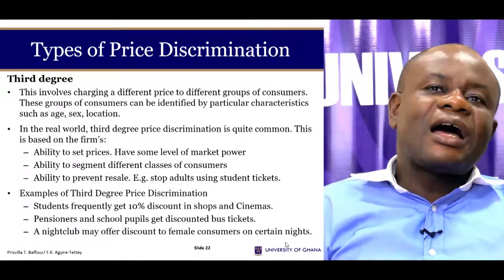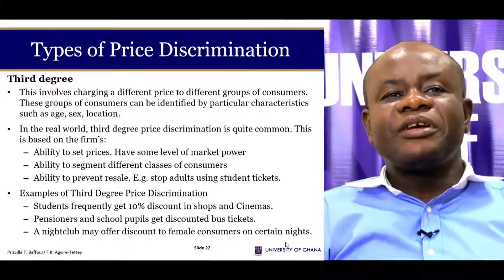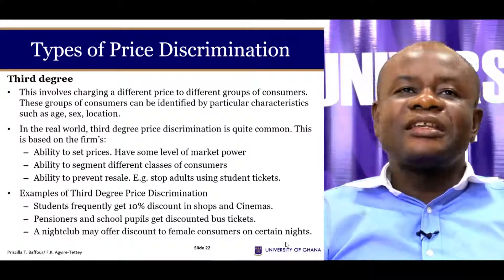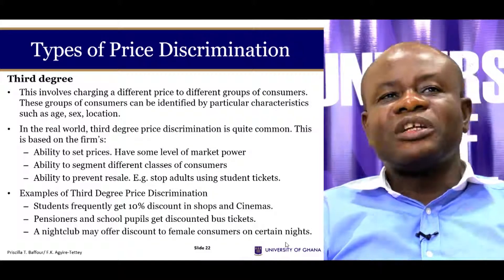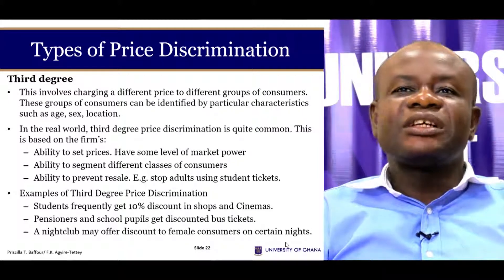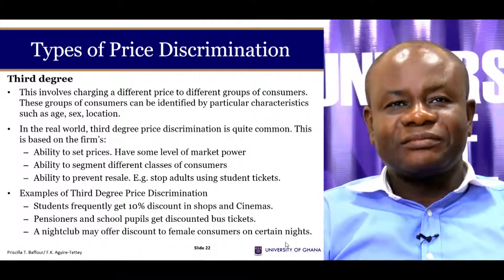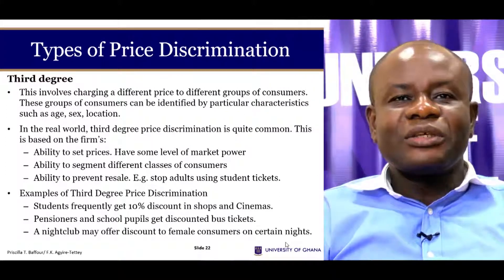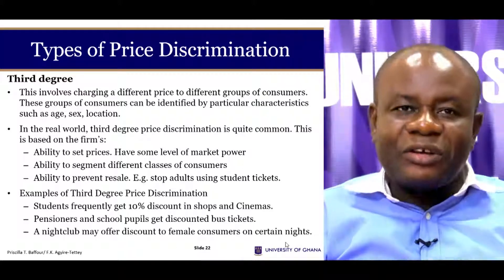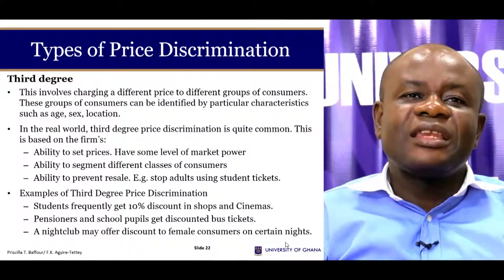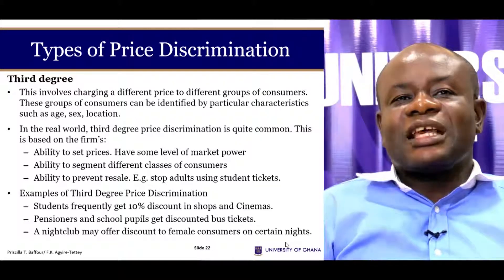The third type of price discrimination is third-degree price discrimination. In this case, the monopoly discriminates on the basis of age, sex, location, and other characteristics. Part of the consumer surplus is also taken away here. Various examples are provided in the slides.